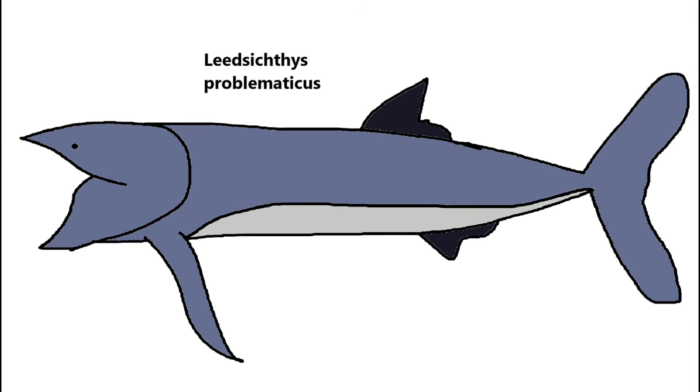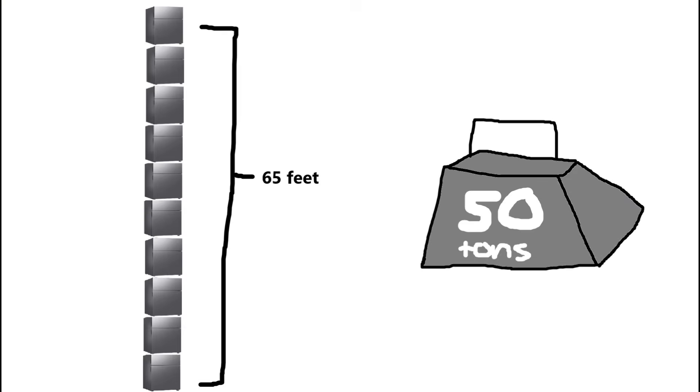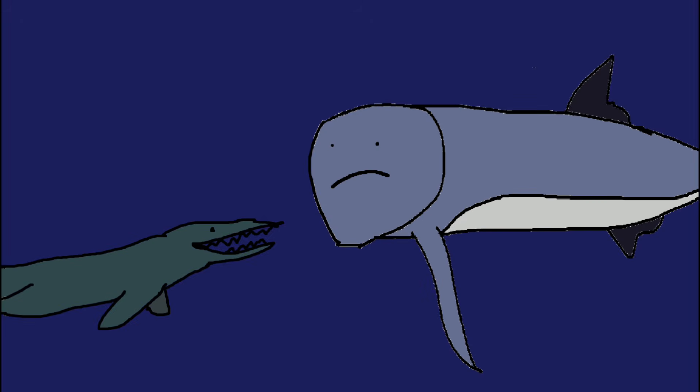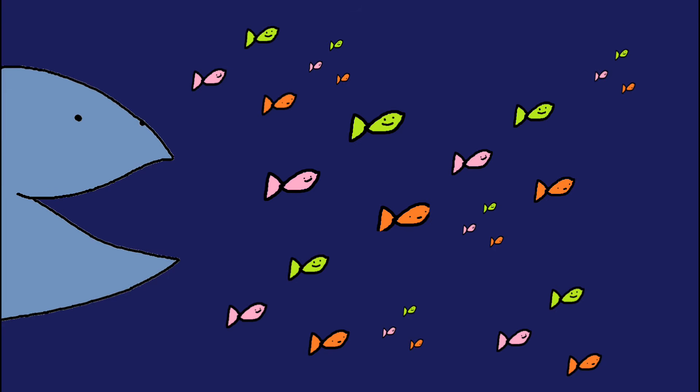Leedsichthys was a prehistoric filter feeder, the largest fish ever known. This Jurassic giant reached lengths of up to 65 feet and weighed up to 50 tons, rivaling today's largest whales. It mainly fed on plankton, using gill rakers to filter vast quantities of water. Despite its massive size, it was likely preyed upon by marine reptiles like pliosaurs. Fossil evidence from Europe reveals a creature uniquely adapted to dominate the oceans of its time, a peaceful giant in a world of predators.